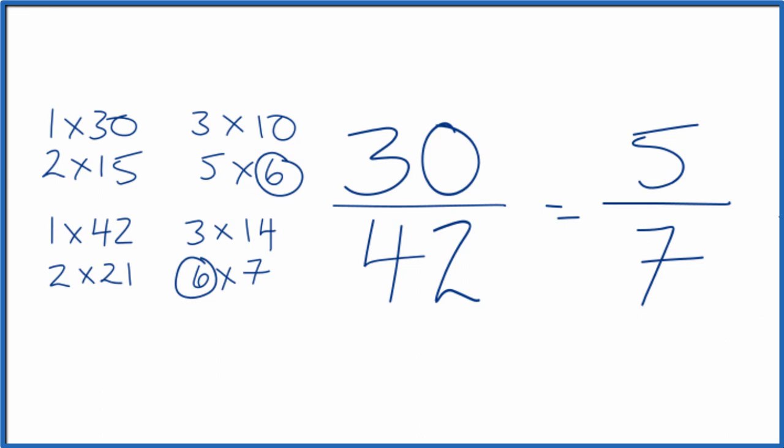And we can't reduce 5 sevenths any further. If you divide 30 by 42 or 5 by 7, you get the same decimal answer. They're equivalent fractions. We've just simplified 30 over 42 down to 5 sevenths.